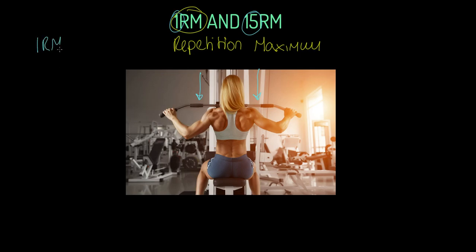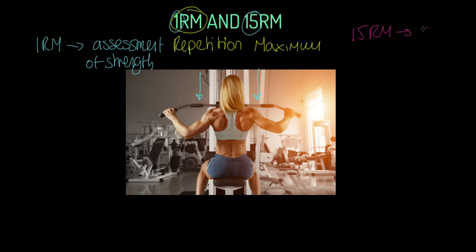Our 1RM is an assessment of strength — you could say maximum strength. Whereas our 15RM, in another color over here, is an assessment of muscular endurance. So we've got an assessment of strength and an assessment of muscular endurance.